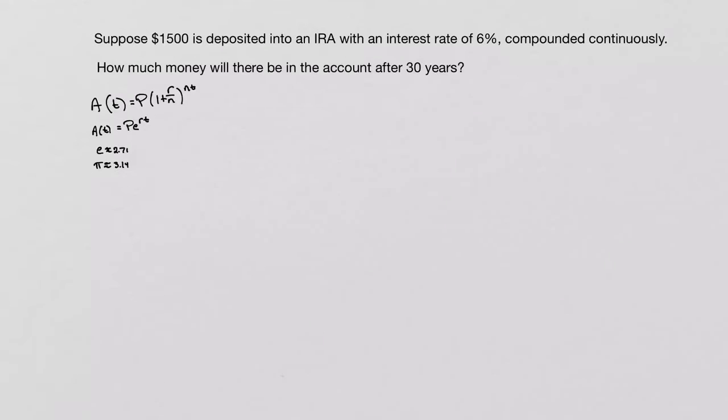So our P still stands for our principal, our beginning amount. Well, our principal is $1,500. So this is our P.